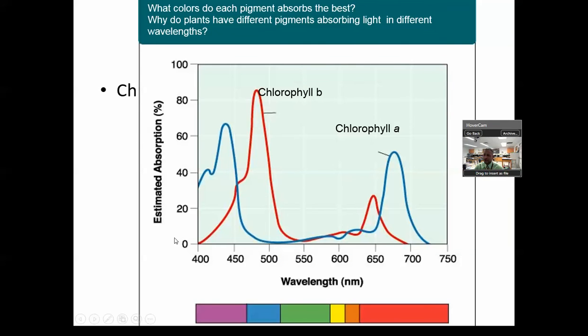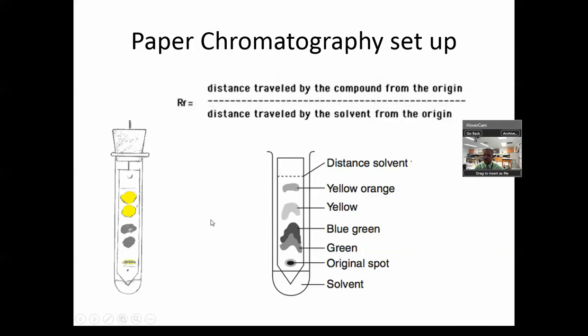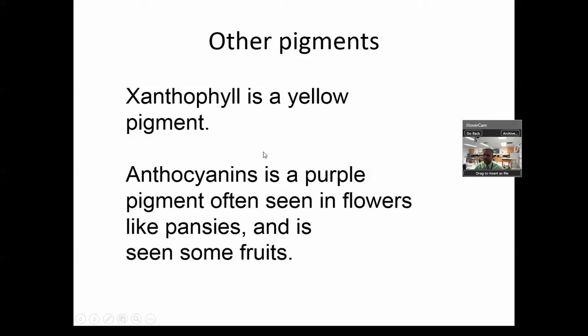Here's some other colors. And here's a chromatography lab that we'll hopefully do. And let's look at here's a couple other pigments. Xanthophyll, anthocyanins are making purple and bluish colors.